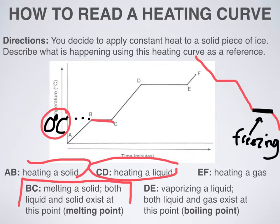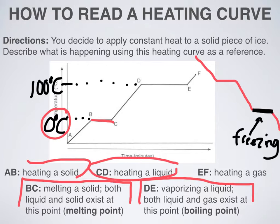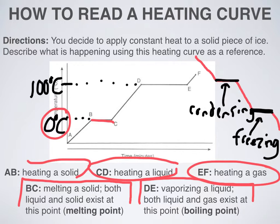Line segment CD is just heating up a liquid. Line segment DE is vaporizing a liquid — both liquid and gas exist at the same point — and that is the boiling point. For water, that would be 100 degrees Celsius. If this were a cooling curve, that would be where condensation starts — we can think of that as the condensing point. Then at the very end, I'm heating up a gas. So heating and cooling are just opposites: the melting point is the same as the freezing point, and the boiling point is the same as the condensing point. That's how you read a heating curve, and a cooling curve is exactly the opposite direction.